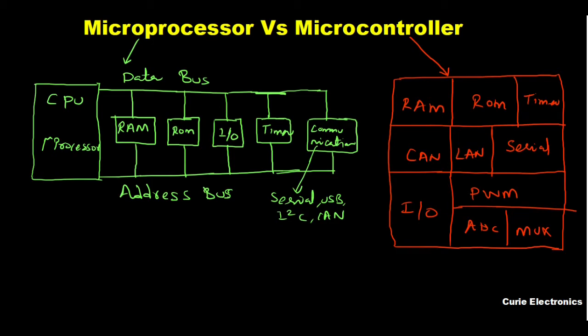In a microprocessor, all RAM, ROM, I/O, timer, and communication chips are externally added, giving the designer the freedom to select them. But in a microcontroller, everything is built in and you cannot change it. The advantage of a microcontroller is low cost — it takes less area, is very low cost, and whatever is required is already there in a single chip.